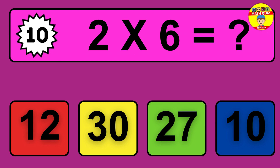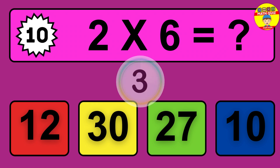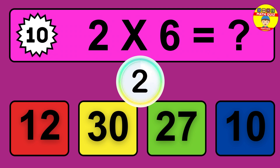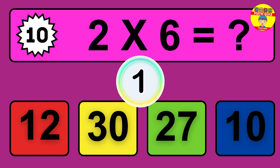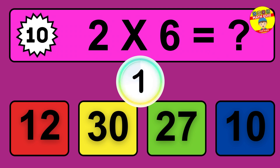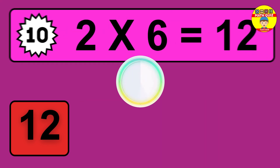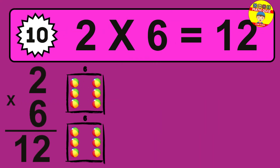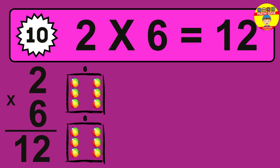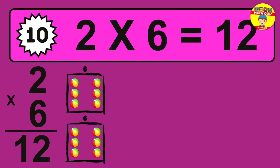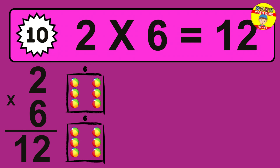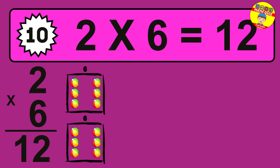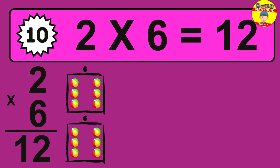Question 10. 2 times 6 equals what? The answer is 2 times 6 is 12. To calculate, we have 2 groups with 6 balls each one. So how many balls do we have? 12 balls.